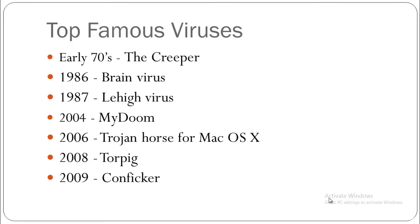After that we had the Lehigh virus in 1987 — the first memory-resident file infector that attacked all executable files, taking control when a file was opened and whenever it was closed. Later we had the Jerusalem virus, which had bugs that caused it to re-infect files that were already infected. After that came the Robert Morris worm, along with other notable threats like a trojan horse for Mac OS X, Torpig, and Conficker. The Morris worm invaded ARPANET computers and disabled 6,000 computers on the network by overflowing their memory banks with copies of itself.